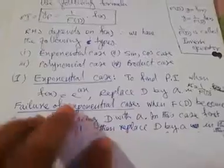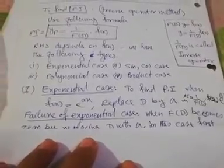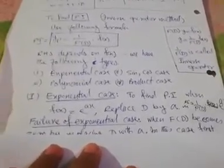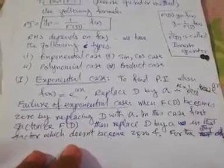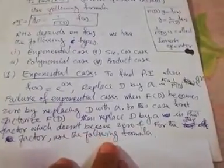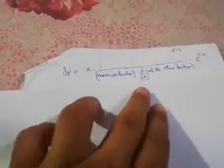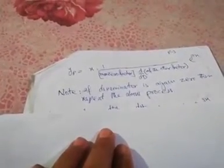The failure of the exponential case occurs when f(D) becomes zero after replacing D with a. In this case, first factorize f(D), then replace D by a in the factor that does not become zero. For the factor that becomes zero, use the formula: x times 1 over the non-zero factor times d/dD of that factor times e^(ax). If the denominator is again zero, repeat the process.